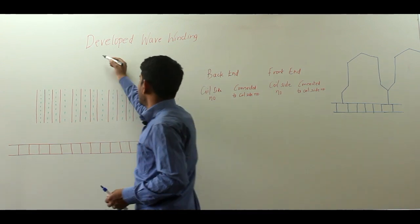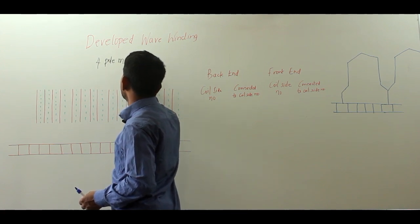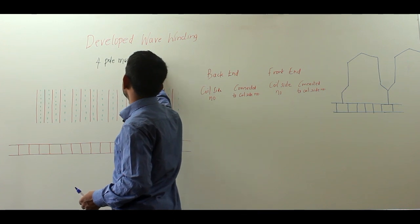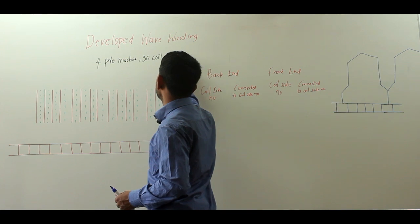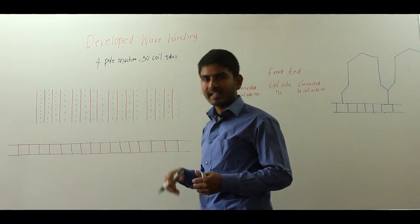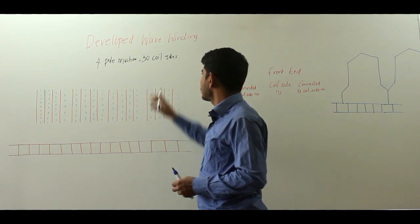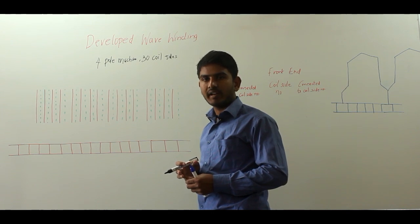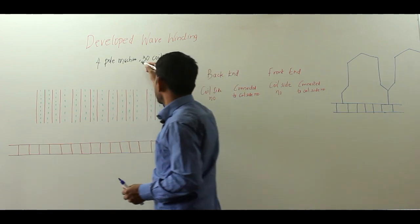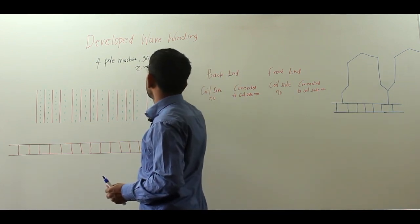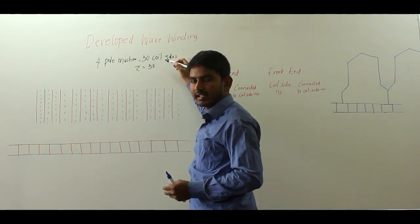So let me consider a 4-pole DC machine whose armature is having 30 coil sets, taken as a single layer winding. For a single layer winding you have one conductor in each slot. So with 30 coil sets and single layer winding, the total number of conductors is 30, since each coil set is considered as a conductor.